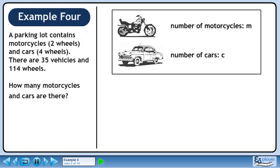Let's call the number of motorcycles M and the number of cars C. We can write the equation M plus C equals 35 since there are 35 vehicles in total.